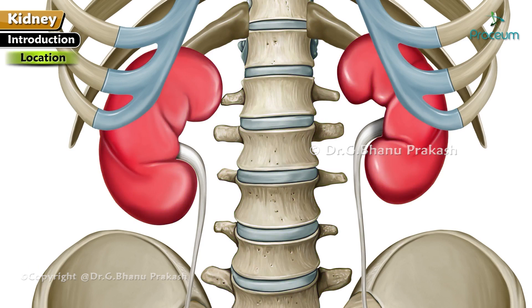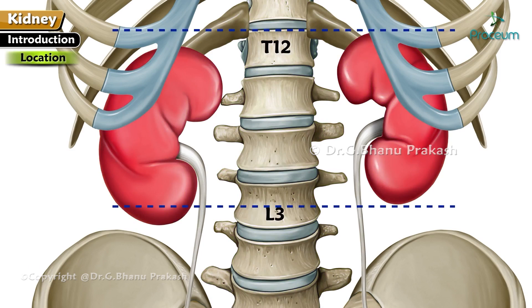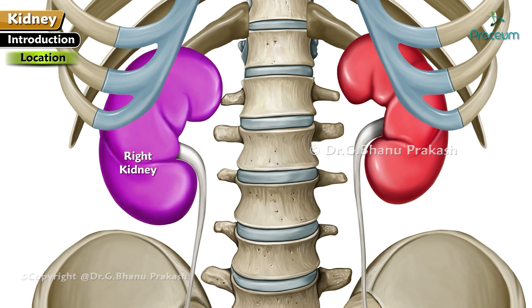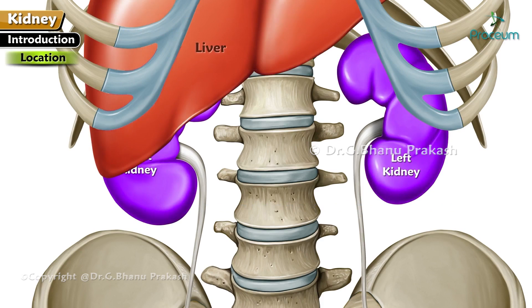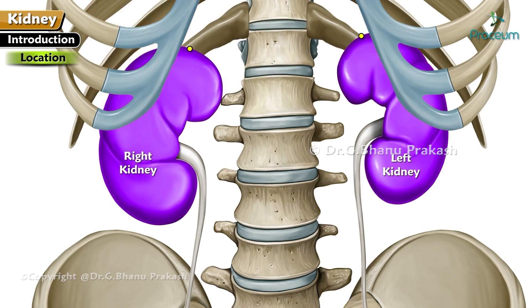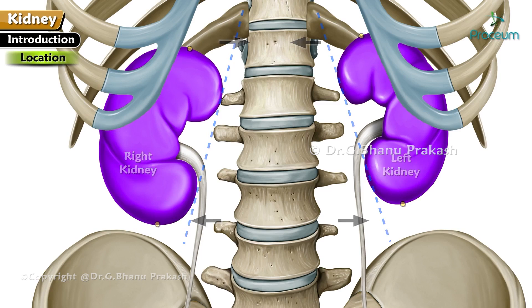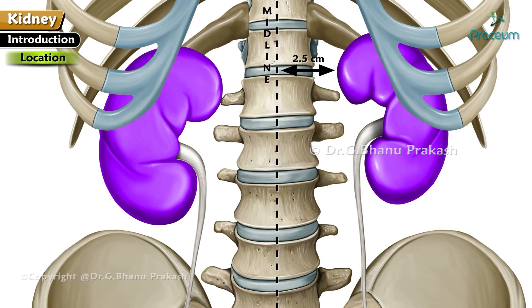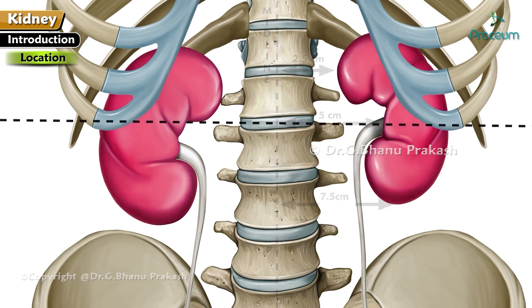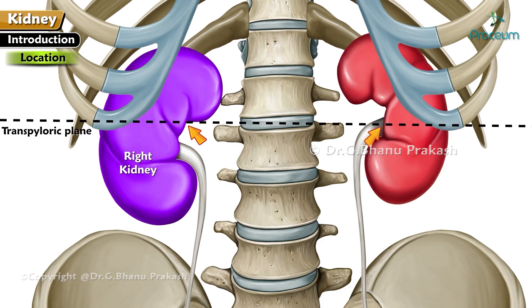Kidneys extend from the upper border of T12 vertebrae to the center of the body of L3 vertebrae. The right kidney is slightly lower than the left kidney due to the presence of the liver. Upper poles are 2.5 cm away from the midline, the hilum is 5 cm away from the midline, and lower poles are 7.5 cm away from the midline. The transpyloric plane passes through the upper part of the hilum of the right kidney and through the lower part of the hilum of the left kidney.